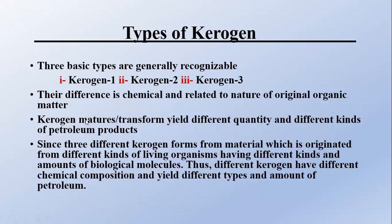It depends upon the kerogen type — Type 1 produces one kind, Type 2 produces another. Different kerogen types produce different quantities and different kinds of petroleum products, because these three different kerogen types formed from material originated from different kinds of living organisms with different kinds and amounts of biological molecules. Some plants and animals evolved differently, which is why kerogen types produce different types of petroleum products.